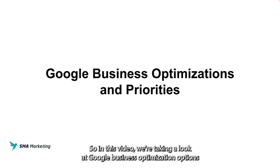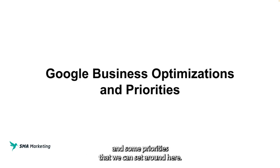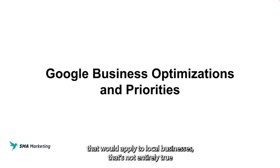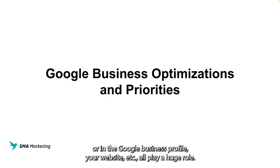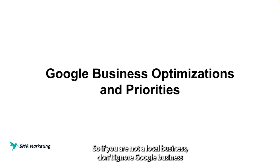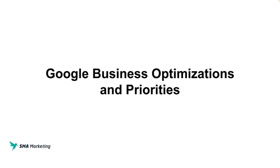So in this video, we're taking a look at Google Business optimizations and some priorities we can set around here. While this seems like only something that would apply to local businesses, that's not entirely true, because making sure that you have your entities fully optimized — whether it be in the knowledge panel or in Google Business Profile, your website, etc. — all play a huge role. So if you are not a local business, don't ignore Google Business and making sure that your profile makes sense.